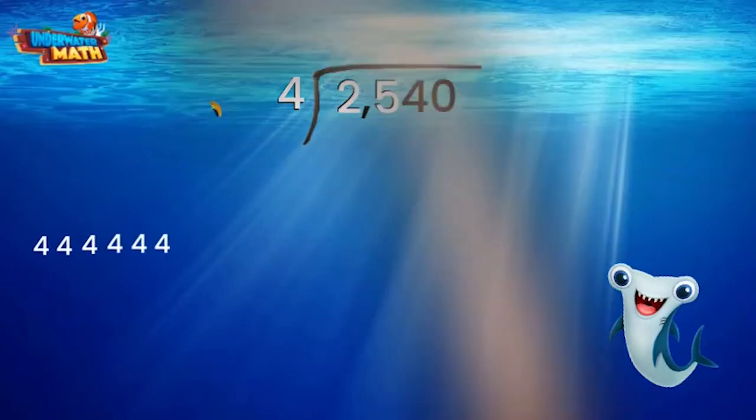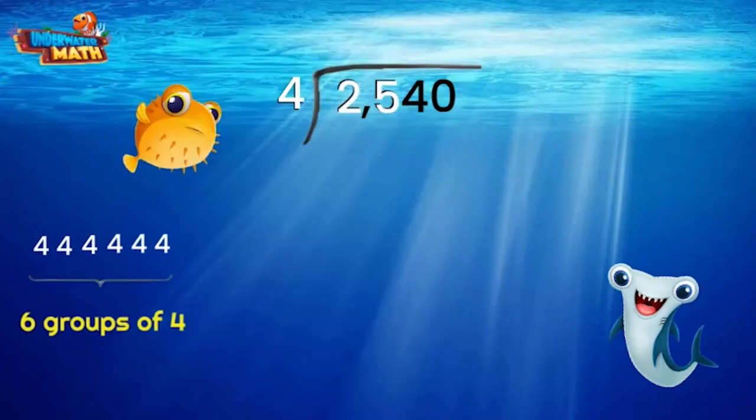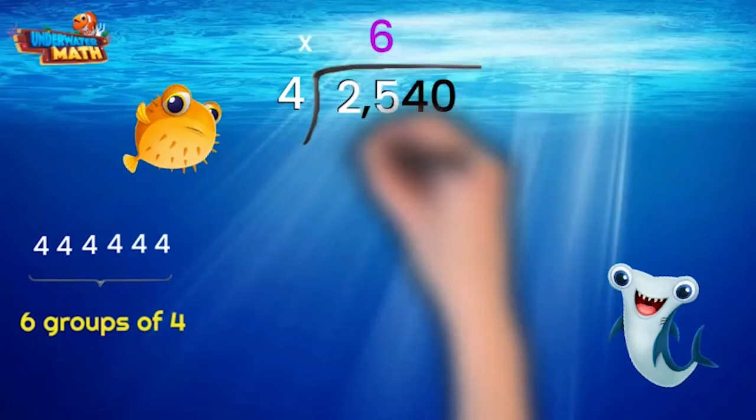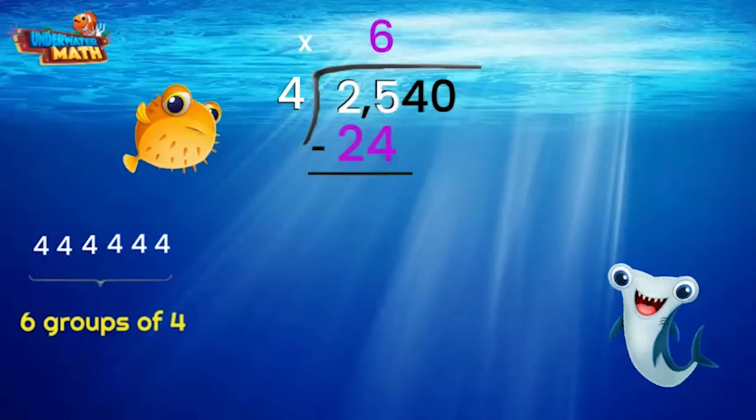4 fits into 25 six times. We will put our 6 right above the 5 we just used. Now we multiply: 4 times 6 to get 24, and subtract that. Here we have one left over, and we look at our divisor again. But wait, 4 can't fit into 1.